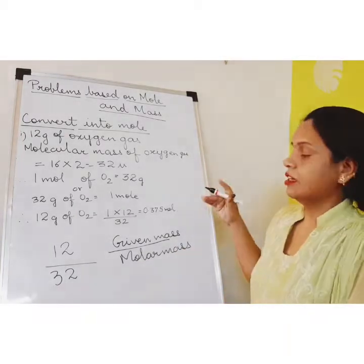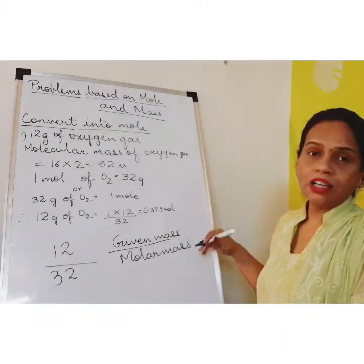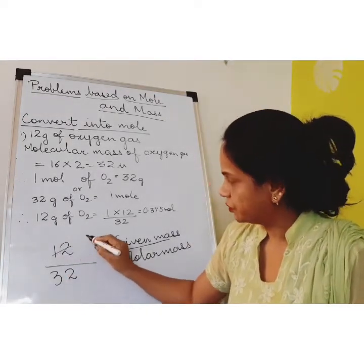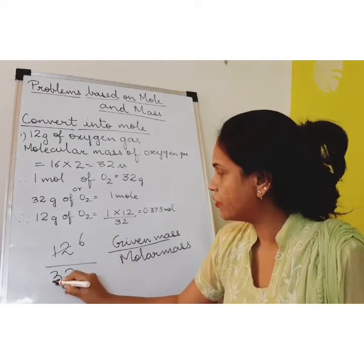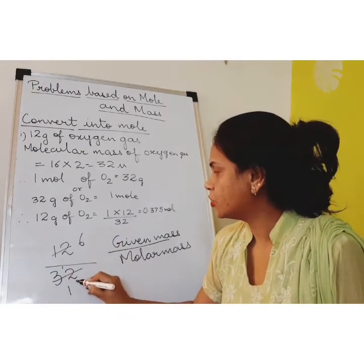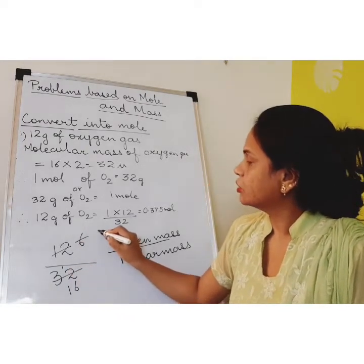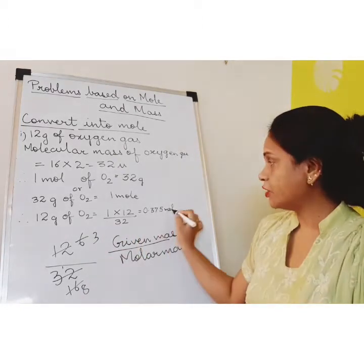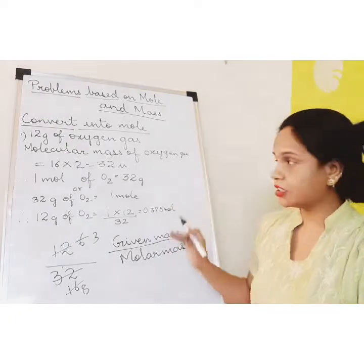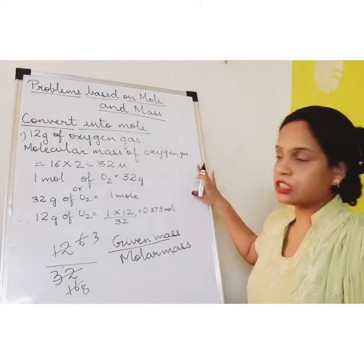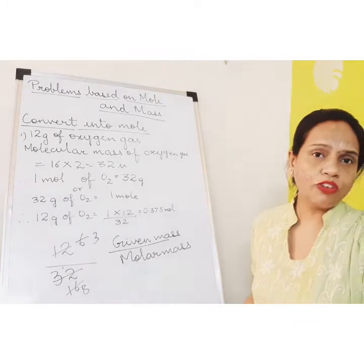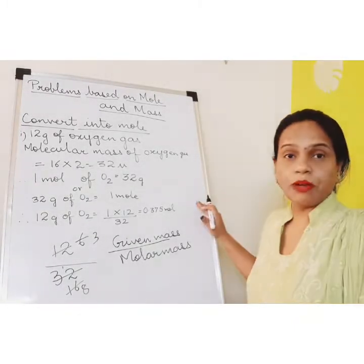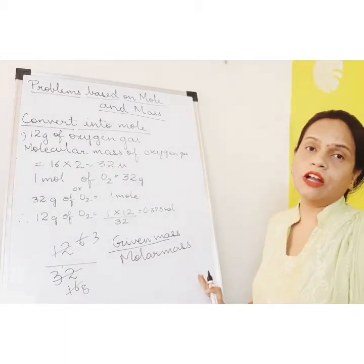So the number of moles we can find out by the mass given to us divided by the molar mass. We divide and get the same answer. So you can either do it the first way, or simply apply the formula: number of moles equals given mass upon molar mass.